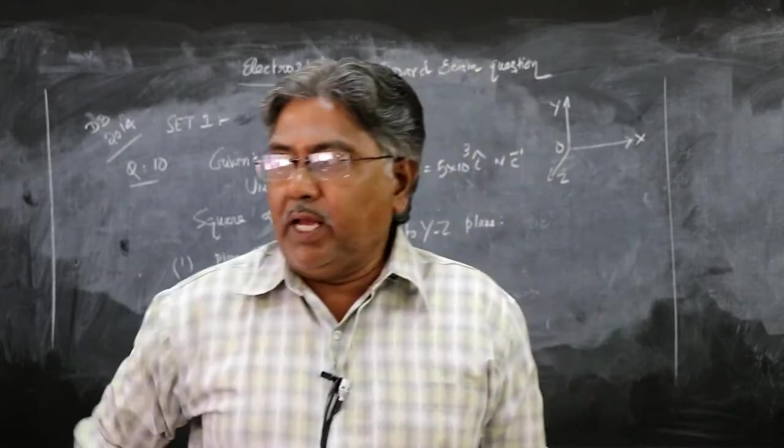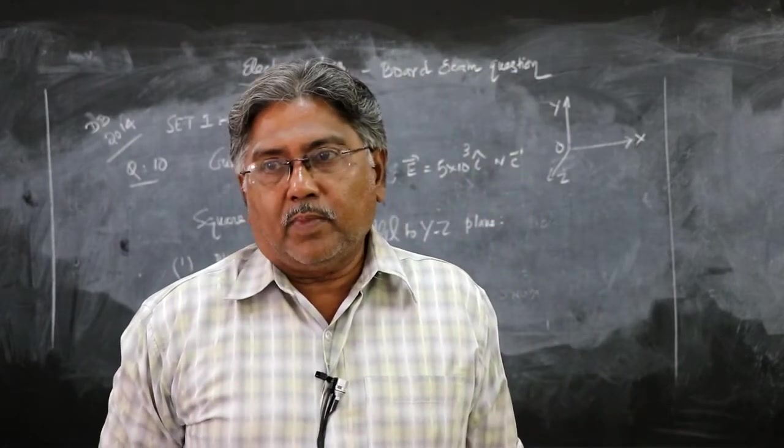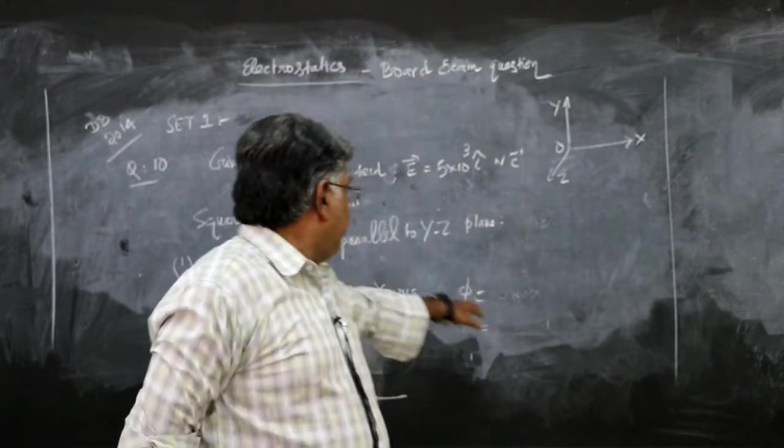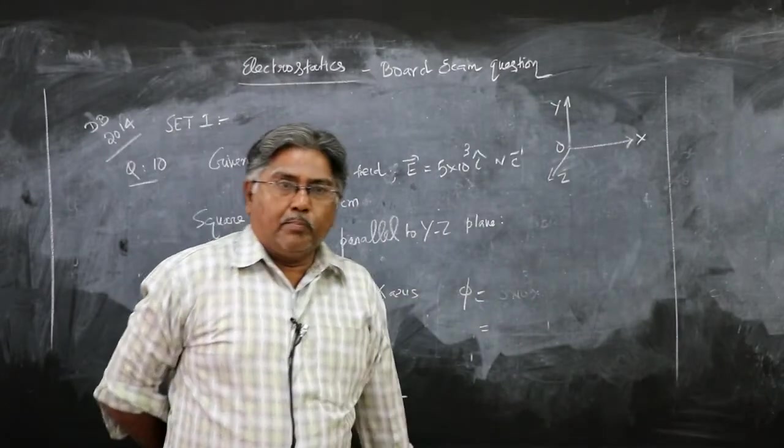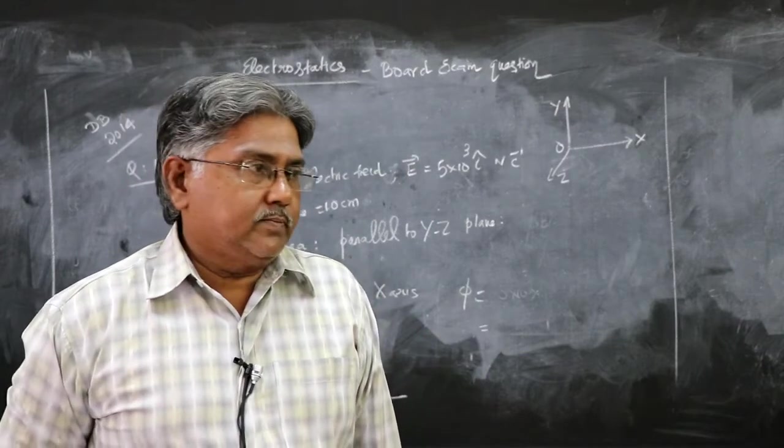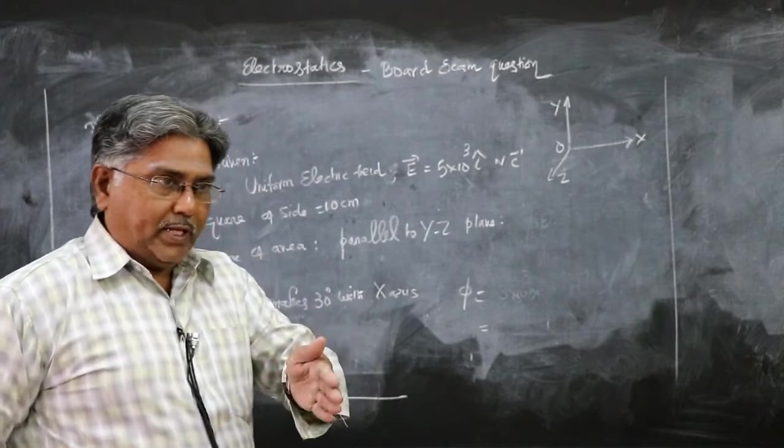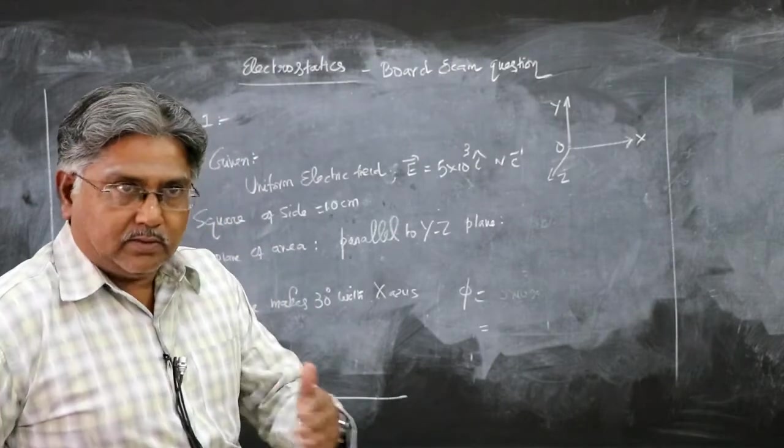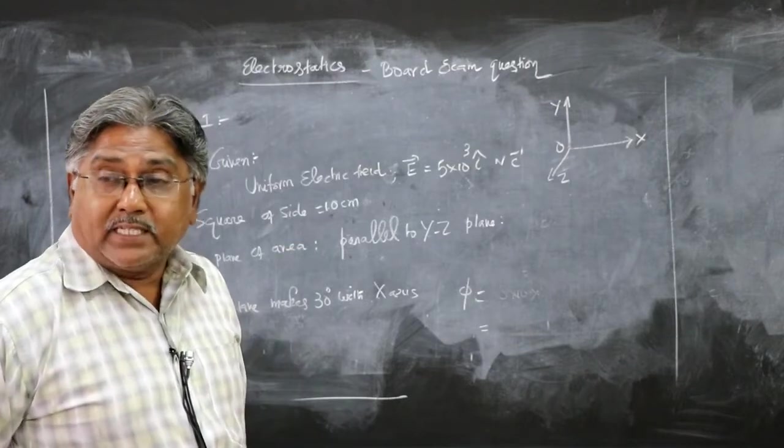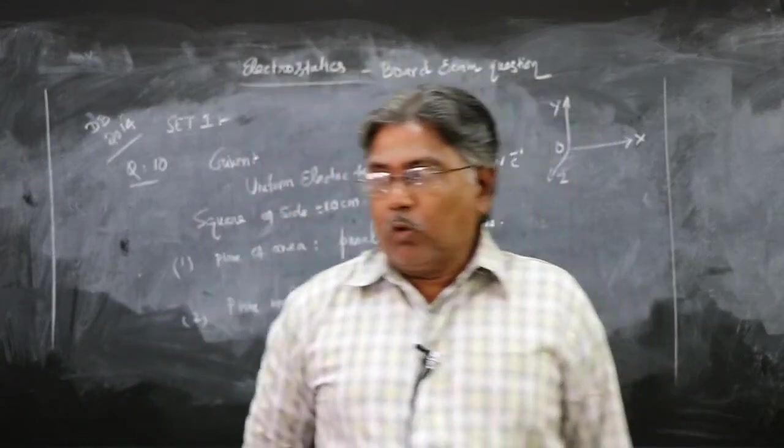The square initially is placed such that its area is in the y-o-z plane or parallel to y-o-z plane, but the electric field is along the x-axis. Find the flux. Second case: the plane rotates such that it makes an angle of 30 degrees with the x-axis. You want to find out the electric flux in both cases.